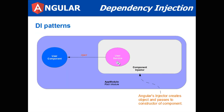Looking at the patterns pictorially: we have an app module and an injector. I could be using a component injector to inject my user service into my user component. The bottom line is: if the component's annotation has a provider with a service, that's the one it's going to use. If it doesn't, it'll use the app module provider. So don't let it confuse you too much.